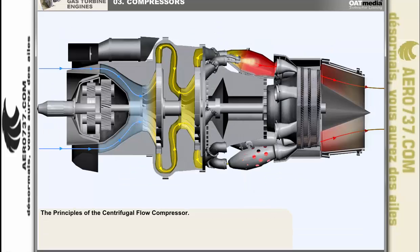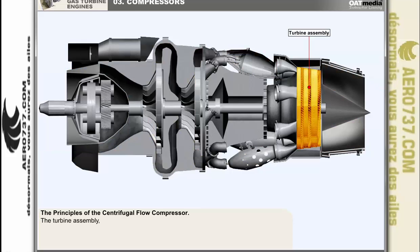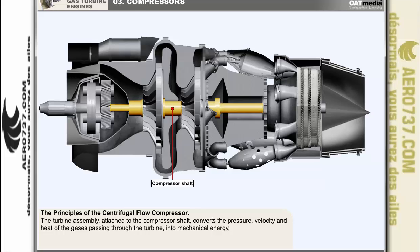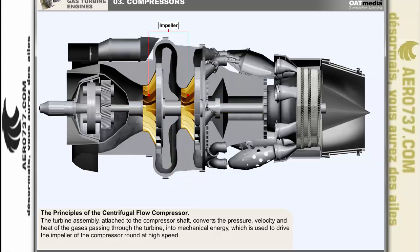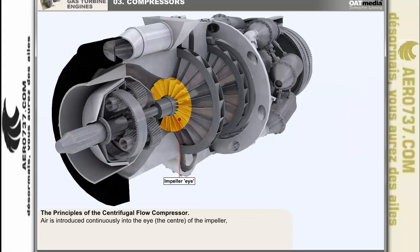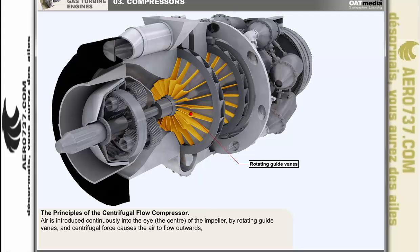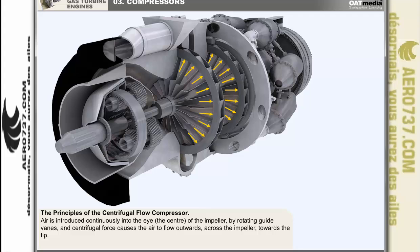We'll now examine the principles of the centrifugal compressor. The turbine assembly, attached to the compressor by a shaft, converts the pressure, velocity, and heat of the gases passing through the turbine into mechanical energy, which is used to drive the impeller of the compressor round at high speed. Air is introduced continuously into the eye — the centre of the impeller — by rotating guide vanes, and centrifugal force causes the air to flow outwards across the impeller towards the tip.